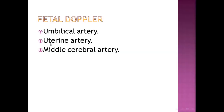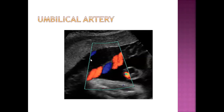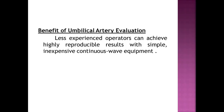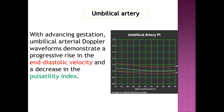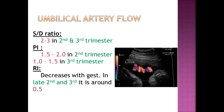In obstetric fetal Doppler, we focus on three things: the umbilical artery, the uterine artery, and the middle cerebral artery. These are the most important vessels to assess. The umbilical artery is the easiest — a less experienced operator can achieve highly reliable results with simple, inexpensive equipment. With advanced gestation, the umbilical artery Doppler waveform demonstrates progressive rise in end-diastolic velocity and a decreased pulsatility index, meaning there is more blood supply to the fetus.